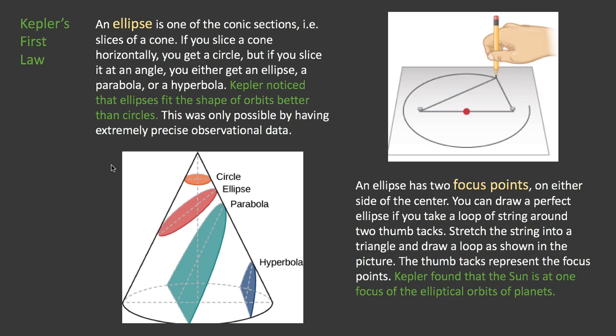So the first law. An ellipse is, first of all, in general, about the shape, an ellipse. It's one of the conic sections, which means it's a slice of a cone. So here we have pictured a cone. And you can slice a cone in different ways. If you slice it horizontally, you get a circle. If you slice it at an angle, you get an ellipse. And if that angle is steep enough, you will either get a parabola or a hyperbola.